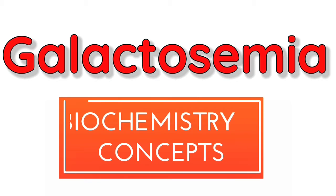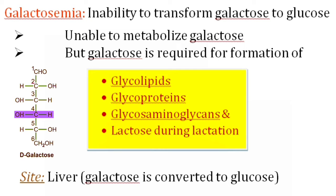Hello everyone, welcome to my channel Biochemistry Concepts. Today's video is about galactosemia. This condition is seen in persons who are not able to transform galactose to glucose. So they cannot metabolize galactose, but galactose is required for the formation of important compounds like glycolipids, glycoproteins, glycosaminoglycans, and the formation of lactose during lactation.